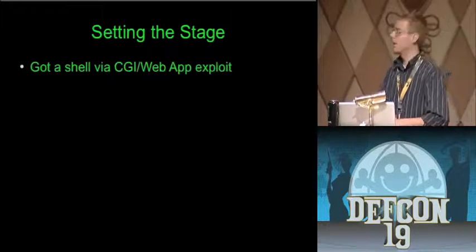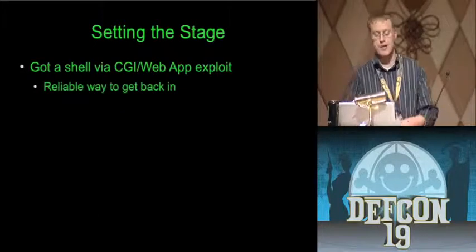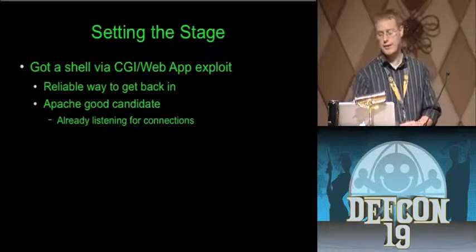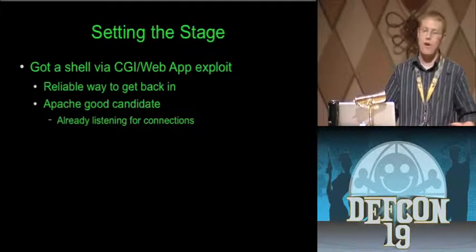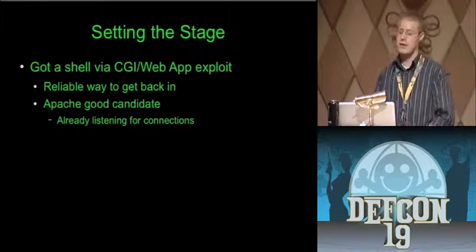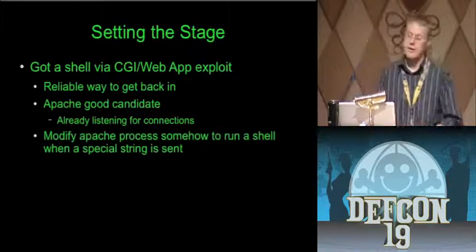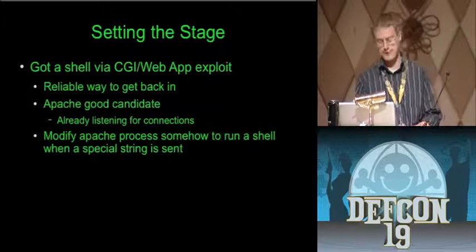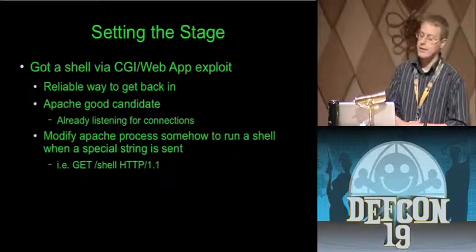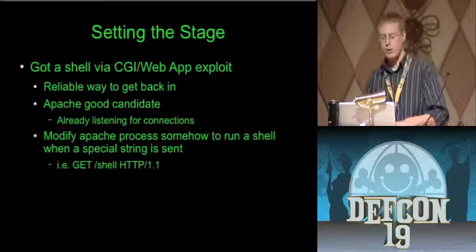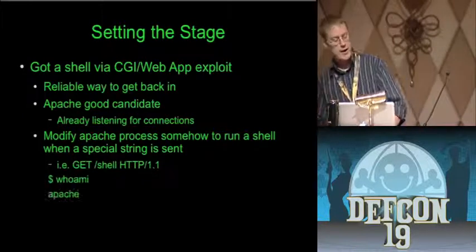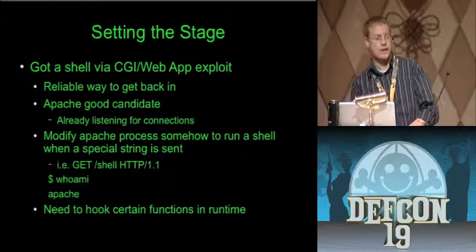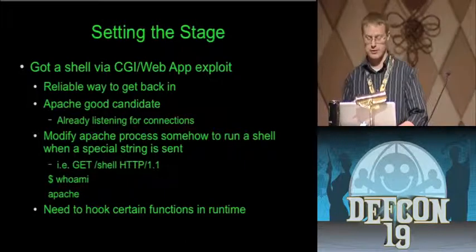To set the stage: I've got a shell via a CGI web application exploit, and I need a reliable way to get back in. Apache is a great candidate to target because it's already listening for connections — it's already got its front door open. My end goal is to modify the Apache process to run a shell when a special string is sent. When I send it 'GET /shell HTTP/1.1', it's going to drop me into a shell, and running whoami will say 'apache'. In order to accomplish that, I need to hook certain functions at runtime.